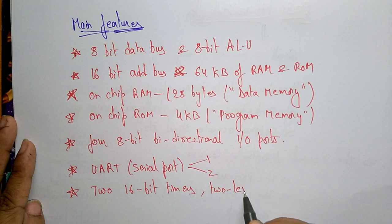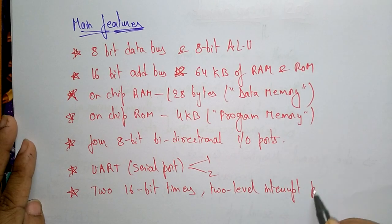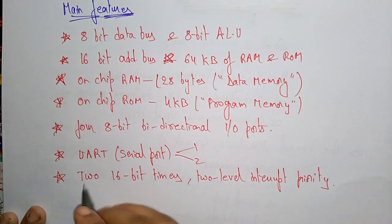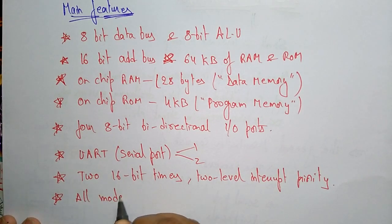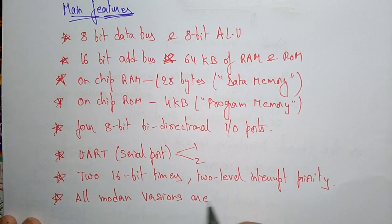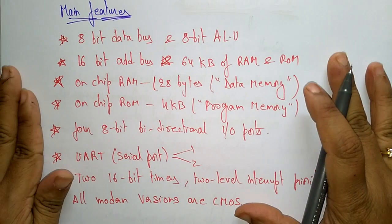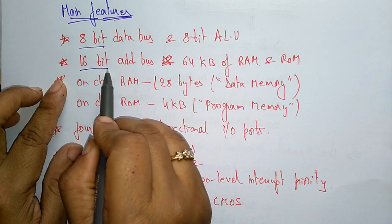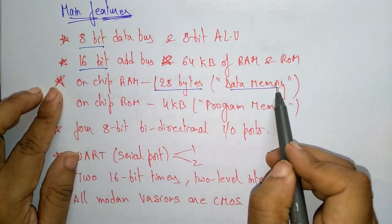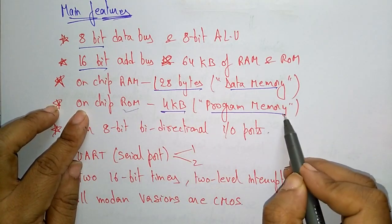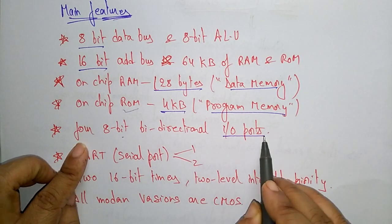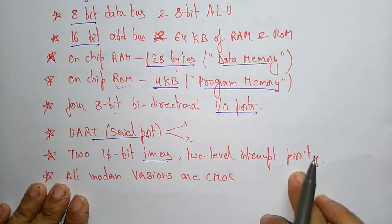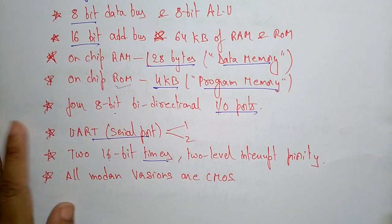The 8051 microcontroller consists of two 16-bit timers and two-level interrupt priority. All modern versions use CMOS technology. So to summarize the main features: 8-bit data bus, 16-bit address bus, on-chip RAM of 128 bytes for data memory, on-chip ROM of 4 kilobytes for program memory, four 8-bit bi-directional I/O ports, one or two serial ports, two 16-bit timers and counters, and two-level interrupt priorities — hardware level and software level.